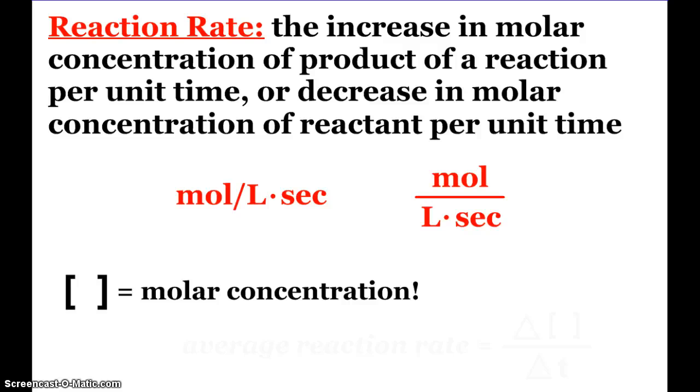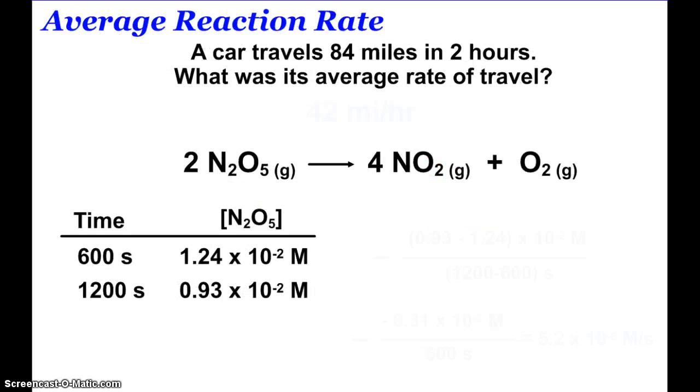When we're talking about a reaction rate, we can say that the average reaction rate is the change in molar concentration, delta, over the change in time. That's not very unfamiliar to us. Here we can say a car is traveling 84 miles in two hours. What was its average rate of travel? 84 miles divided by two hours, that's 42 miles per hour. At any given moment, it might not be traveling that way. It could be at a stop sign, on the highway going 80, or on a side street going 30. But overall, the average rate was 42 miles per hour.